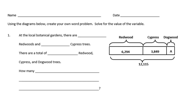Fourth grade Module 1 Lesson 19 homework: using the diagrams below, create your own word problem and solve for the value of the variable. The first one they give us the outline of a word problem and we just fill in the blanks. Number one is the most simple, number two gives us a little less, and by number four we come up with the entire word problem on our own.